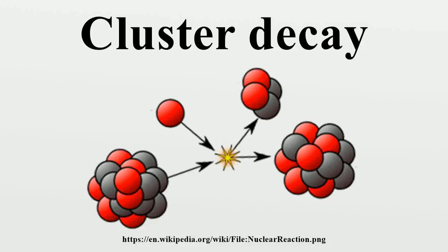Cluster decay, also named heavy particle radioactivity or heavy ion radioactivity, is a type of nuclear decay in which an atomic nucleus emits a small cluster of neutrons and protons, more than in an alpha particle, but less than a typical binary fission fragment.